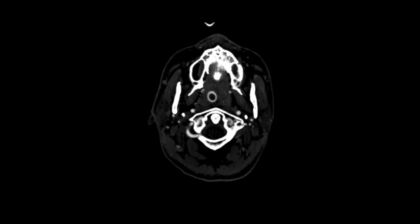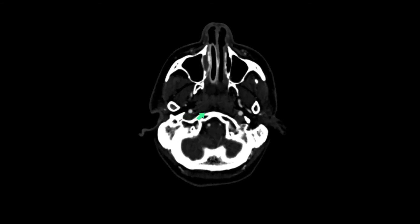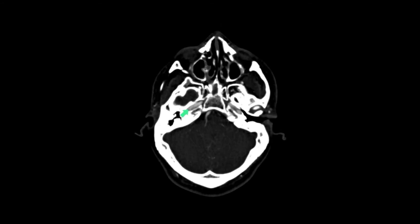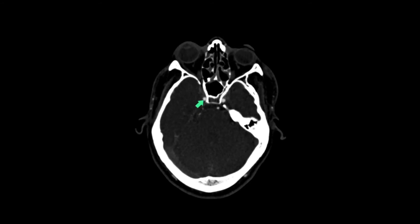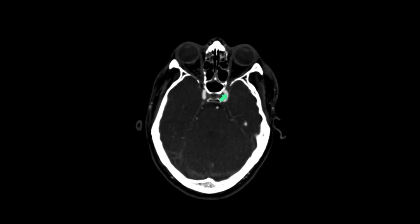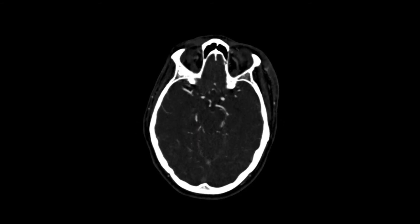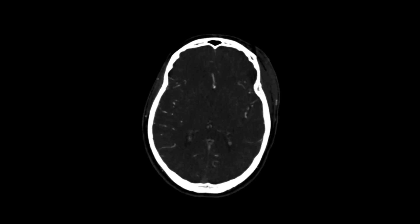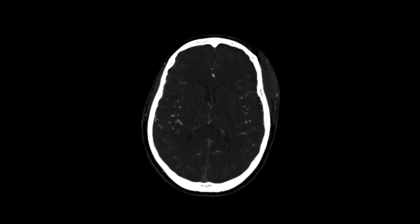This is a CT scan, and the first thing to notice is that the patient is intubated. Here you can see the left internal carotid, and here's the right. As we play the images, you can see both internal carotids heading up into the carotid canal and laceral segments, taking the twist at the carotid siphon to give the anterior and middle cerebral arteries coursing along their respective structures.